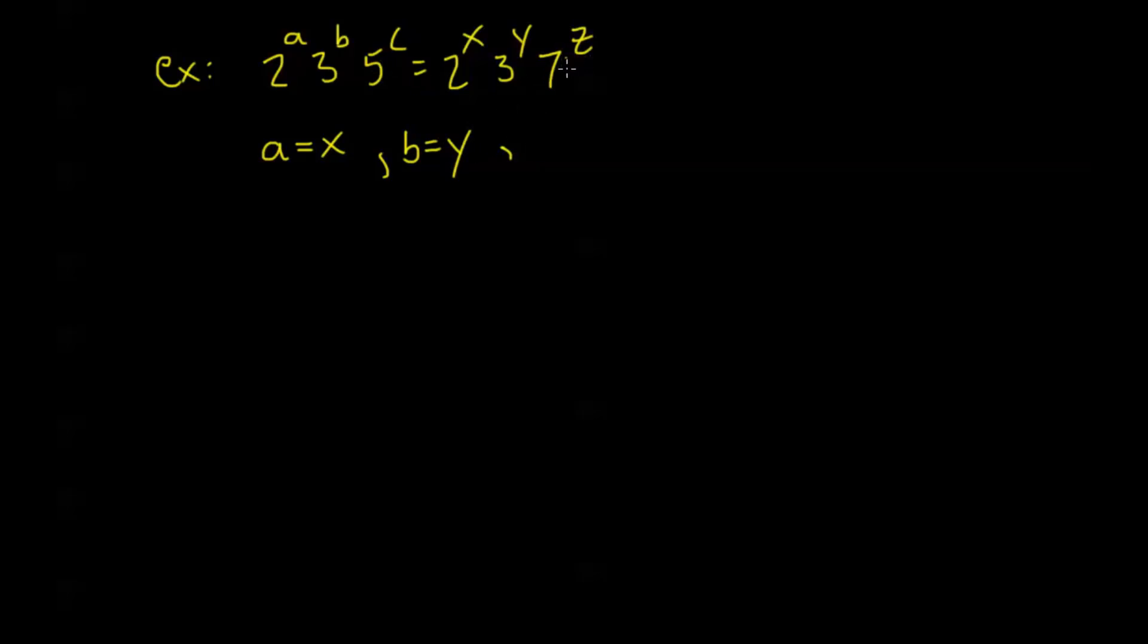And here, look, I don't have any 5s on the right-hand side. So I have nothing on the right-hand side that can divide 5. And I have nothing on the left-hand side that can divide 7. What does that mean? Well, that means that c equals z, and they're both equal to 0. They have to be equal to 0 because I need 5 to the c to equal 1 and 7 to the z to equal 1. Otherwise, these numbers can't be equal because they have these prime factors that don't match up.